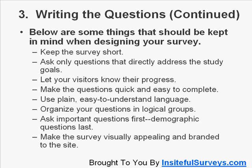Ask important questions first and demographic questions last. Demographic questions are simply age, gender, income — those kinds of things. The sensitive questions should be at the end. You don't want to ask what is your income as the very first question, because they're going to bail on your survey.